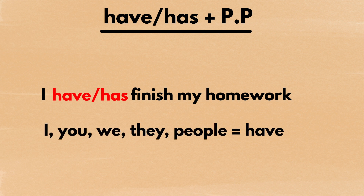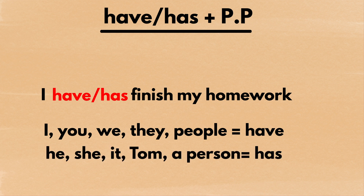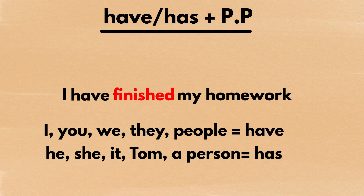If your subject is I, you, we, they, or something plural like people, keep have. If your subject is he, she, it, or something singular like a person, keep has. Since the subject is I in this sentence, I will keep have. Secondly, change the original verb finish into its pp form finished, and we're done.